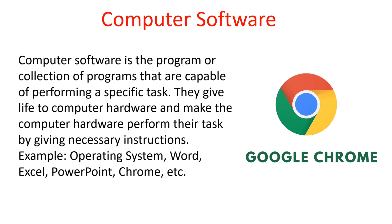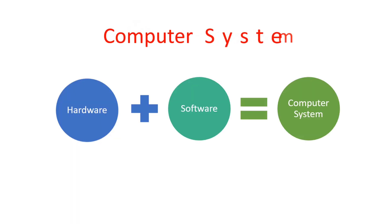So finally, we can say that a computer system is the combination of computer hardware and software. Both components must be present to form a complete computer system — in the absence of either one, the computer system is incomplete.